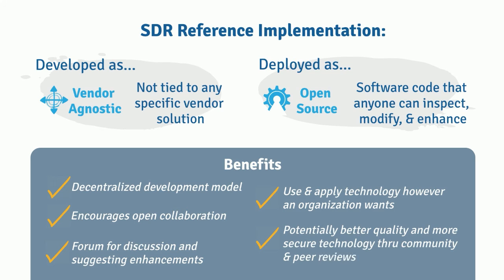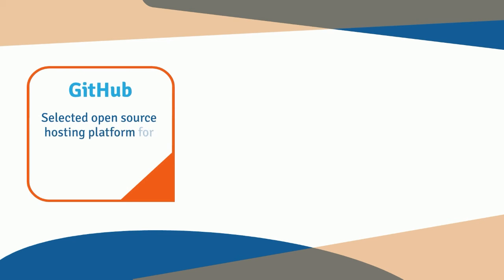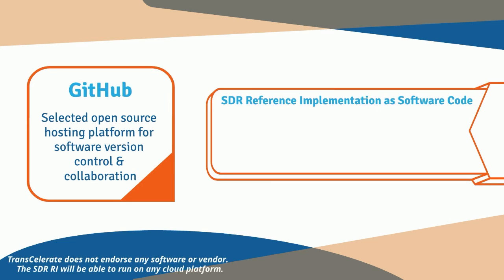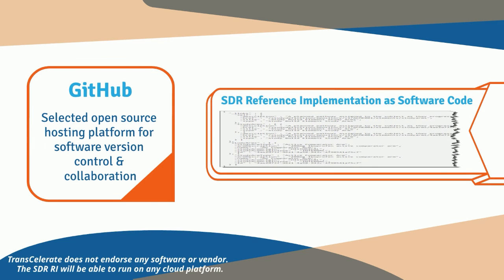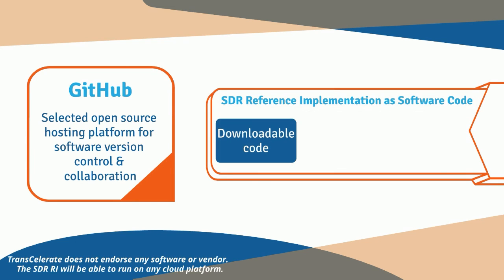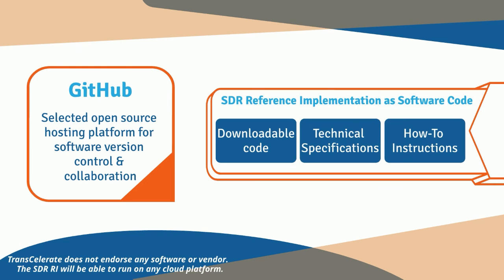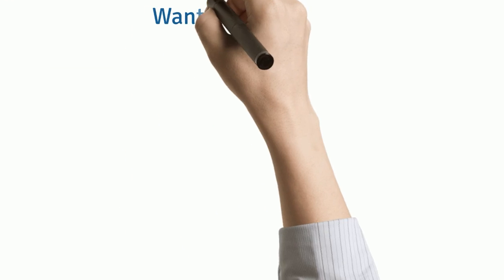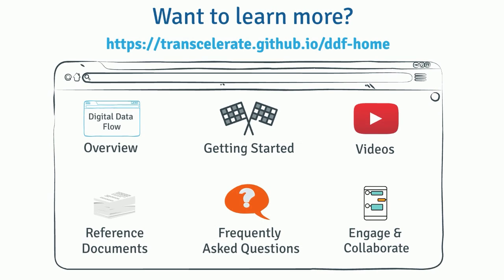GitHub has been selected as the open source hosting platform for software version control and collaboration. In GitHub, the SDRRI is available as software code that can be downloaded with supporting technical specifications and how-to instructions. Want to learn more? Head over to the DDF website to find overview information, getting started guides, videos, reference docs, FAQs, and engagement and collaboration opportunities.